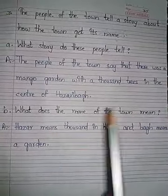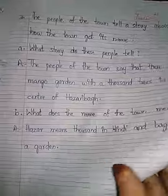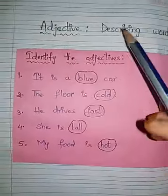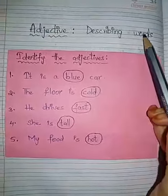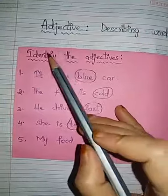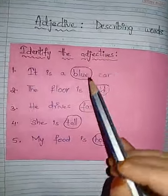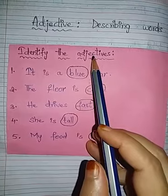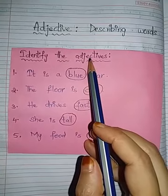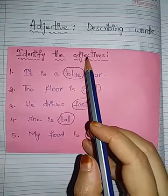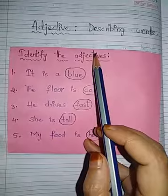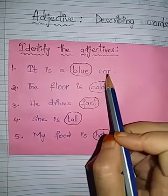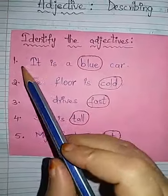Now here is the activity part: adjectives — describing words. Identify the adjectives. Do you know adjectives? Adjectives are nothing but describing words. They tell us about the noun — they describe the noun.